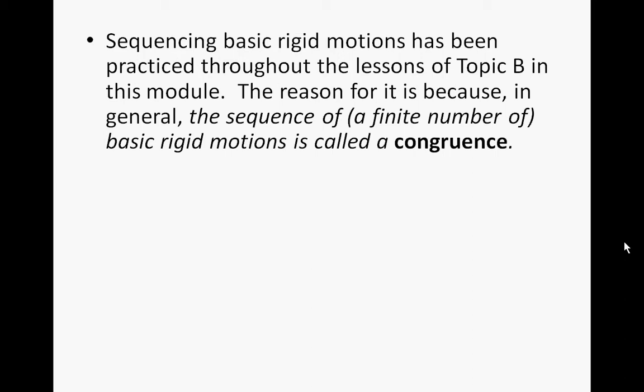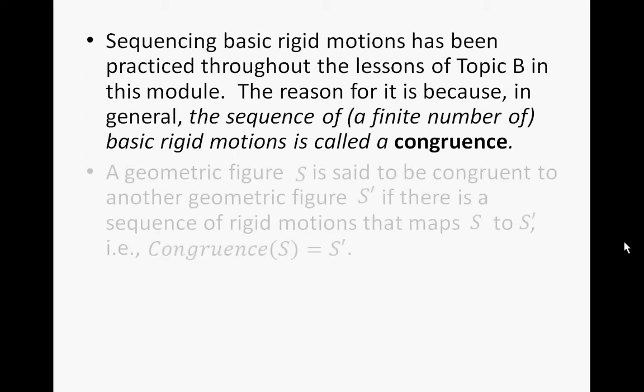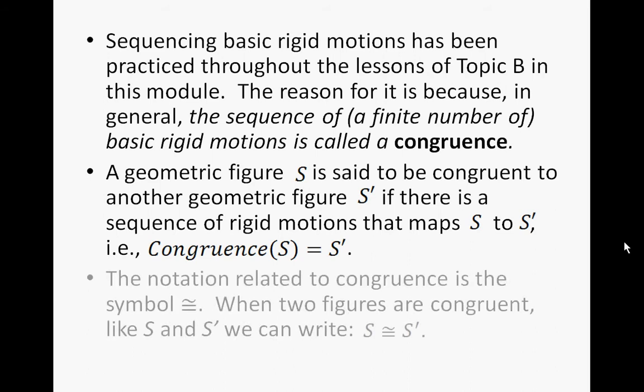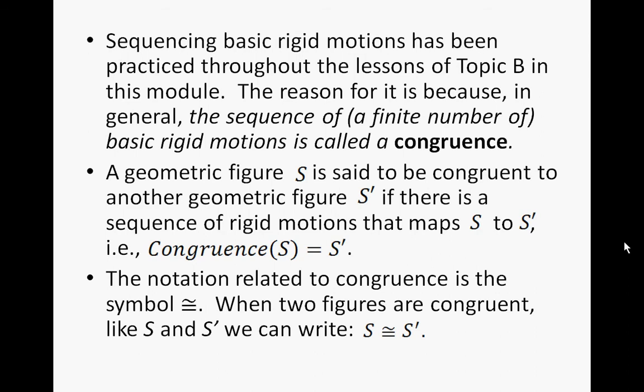Keep in mind, finite means a specific number. A geometric figure S is said to be congruent to another geometric figure S prime if there is a sequence of rigid motions that maps S to S prime. We call it a congruence of S equal to S prime. The notation for congruence is the equal sign with a squiggle on top. When two figures are congruent, like S and S prime, we write S is congruent to S prime.